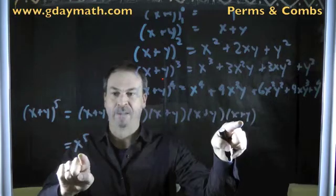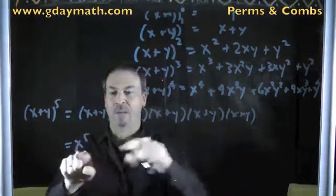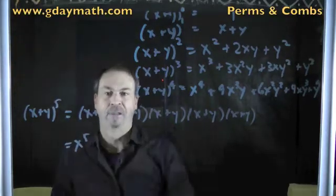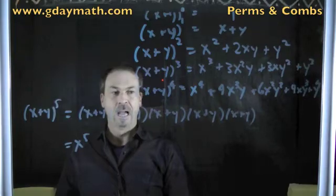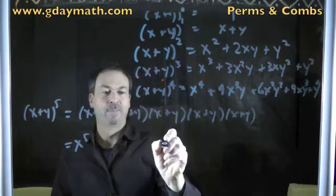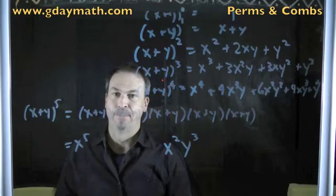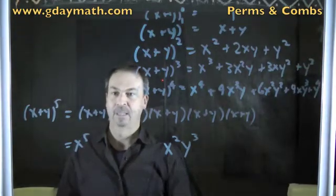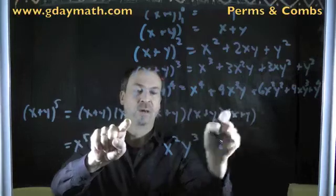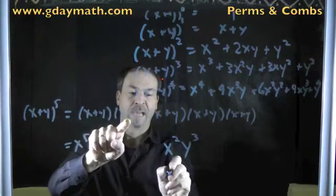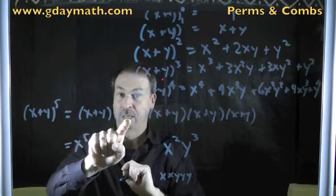In fact, that's the only way I'm going to get x to the 5th — if I choose anything but x in one of these, I'll get a y coming along. Now, will there be an x squared y cubed term? The answer is yes. I can choose x from the first, x from the second, then y, y, y. So it comes from choosing x, x, y, y, y — giving x squared y cubed.